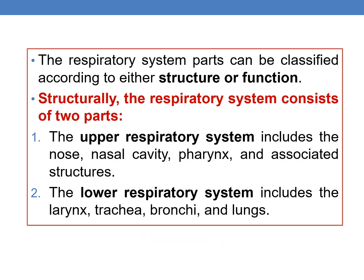The respiratory system parts can be classified according to their structure or function. Structurally, the respiratory system consists of two parts: the upper respiratory system and the lower respiratory system. The upper respiratory system includes the nose, nasal cavity, pharynx, and associated structures, whereas the lower respiratory system includes the larynx, trachea, bronchi, and lungs.